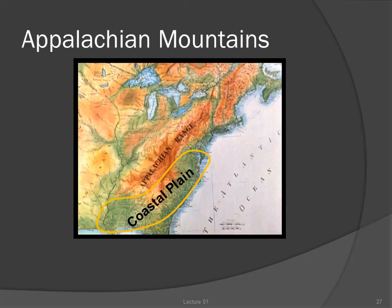Along the Gulf and Atlantic coasts is a low-lying coastal plain, typified by marshes and swamps, and cypress instead of the oak and hickory found in drier areas.